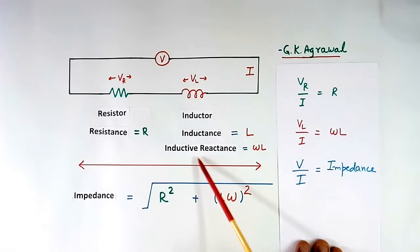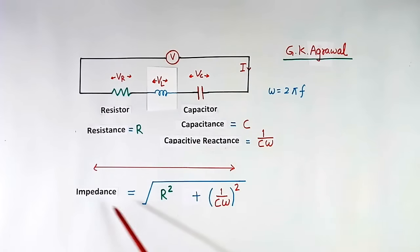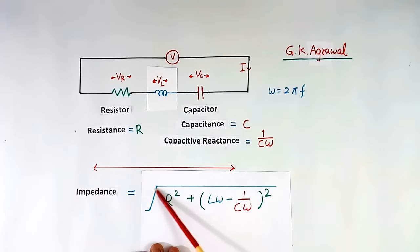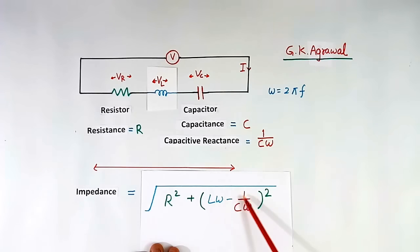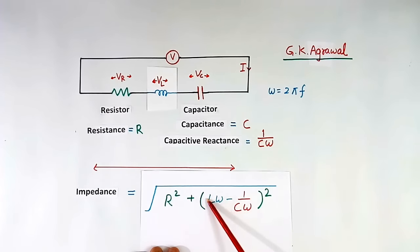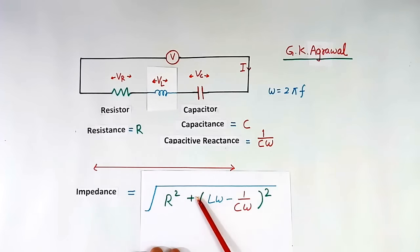Now suppose we also add an inductor. Then the value of impedance will change to √(R² + (ωL − 1/(Cω))²), where ωL is the reactance of the inductor and 1/(Cω) is the reactance of the capacitor. Now suppose these two reactances become equal — they will cancel out. This is called resonance, and the value of impedance will be equal to only R.